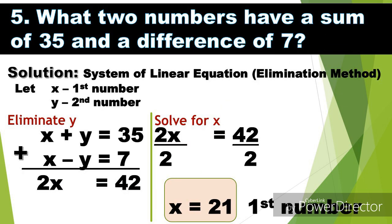Problem number five: what two numbers have a sum of 35 and a difference of 7? This is system of linear equation. We're going to use the elimination method. Let x be the first number and y is the second number. We're going to have the equation x plus y equals 35 because on the statement, two numbers have a sum of 35. And for the second one, difference of 7, so the difference of two numbers, which is x minus y equals 7.